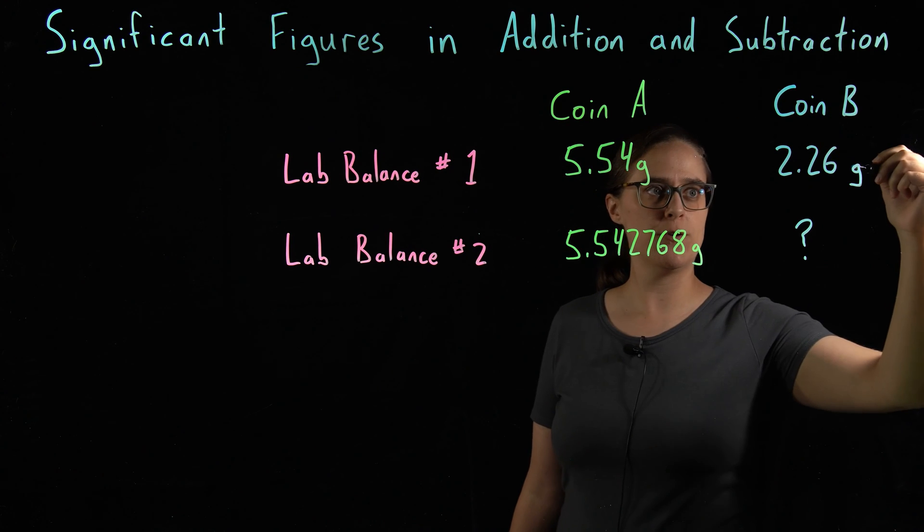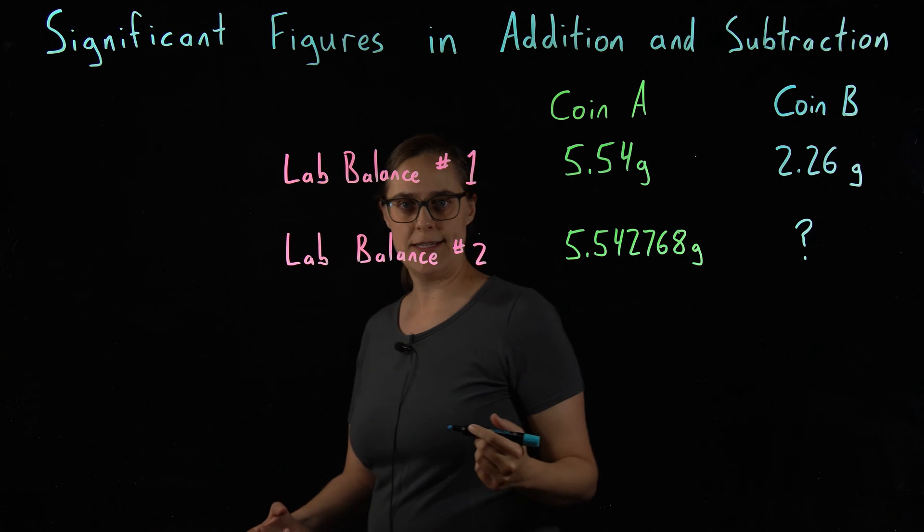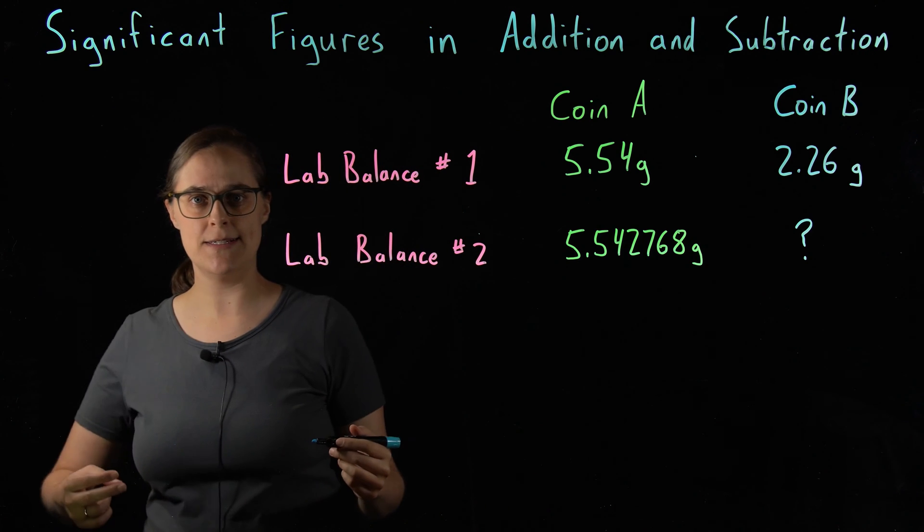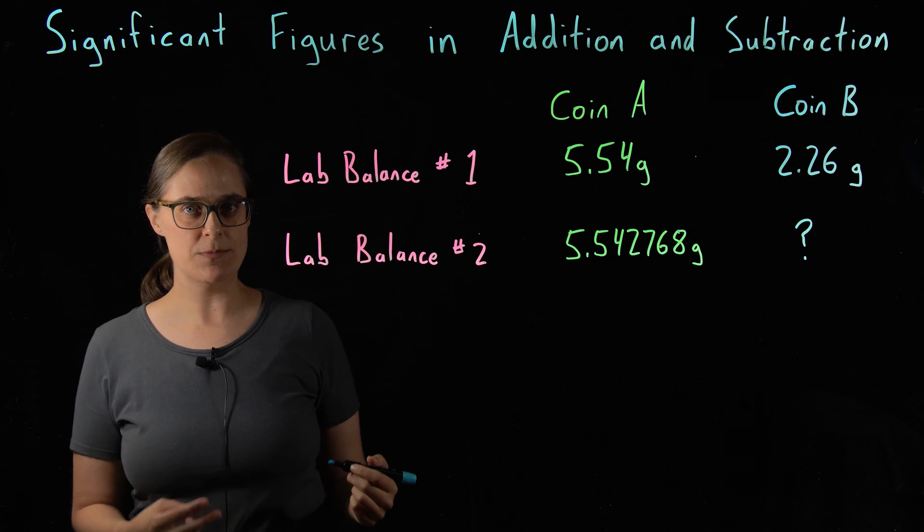The mass that we measured for coin B was 2.26 grams. Now let's say the next day we were able to access a more expensive lab balance, a lab balance that gave us more precision.